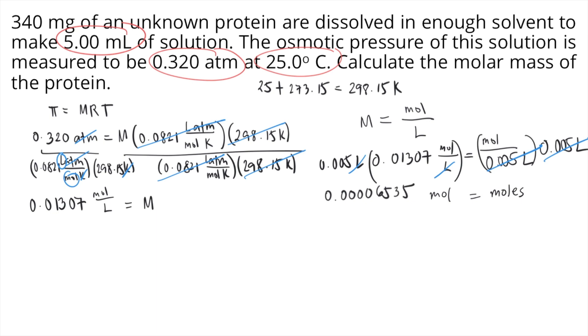Now that we have the moles, we can now solve for the molar mass. Molar mass is just grams per mole. In the problem, we are given 340 mg. So we need to convert that first into grams. How do we convert milligrams to grams? You divide by 1,000. So 340 divided by 1,000 is 0.340 grams.